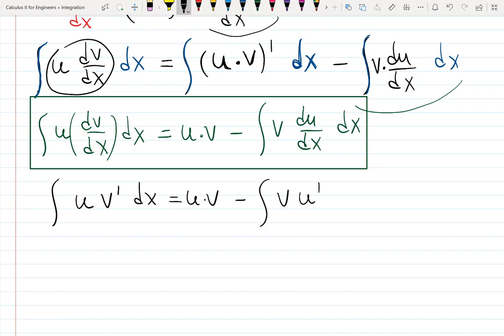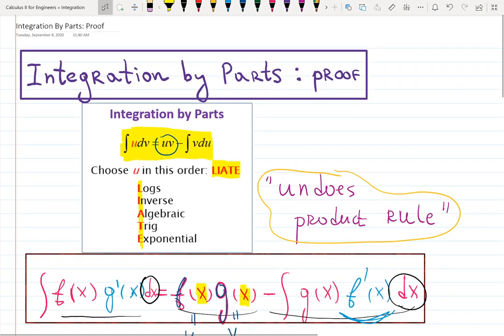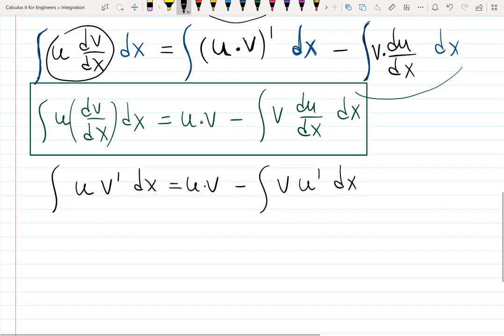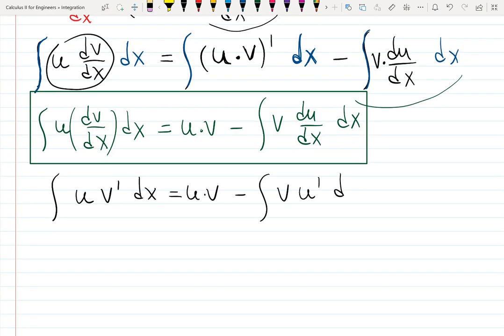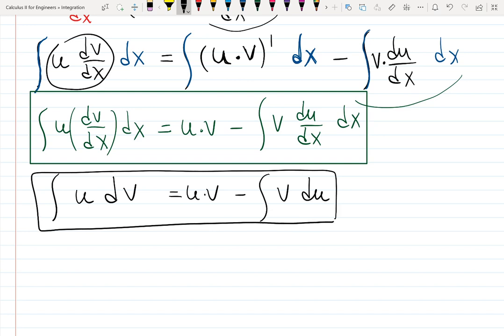We write it down a little bit faster: integral of u v' dx equals u times v minus integral v u' dx. Or this is the formula at the very beginning where they don't even write dx anymore, they just keep dv and du at the end. Instead of u' dx they call it du, and instead of v' dx they call it dv. That takes us to the original formula.